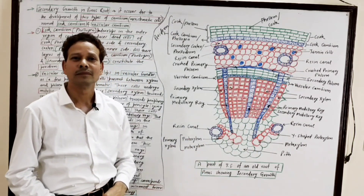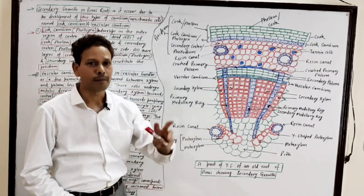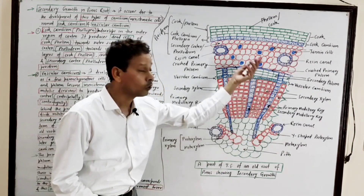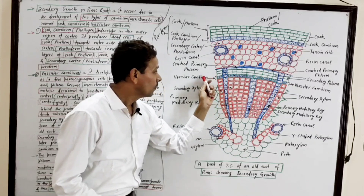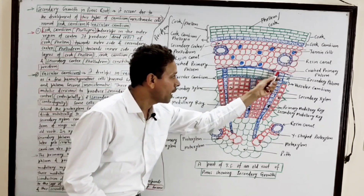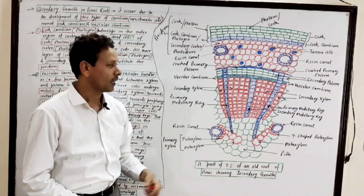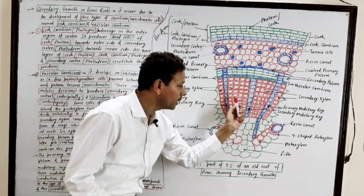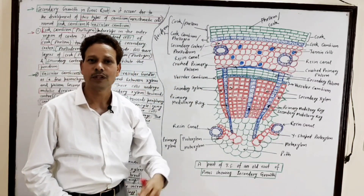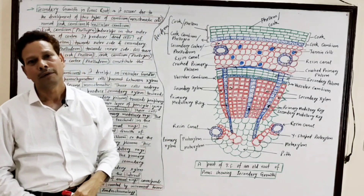In the vascular tissue, there are medullary rays of two types. Primary medullary rays develop just opposite to the proto-xylem from the vascular cambium, and they connect the primary phloem to the primary xylem. Secondary medullary rays persist only within the xylem tissue. Both primary and secondary medullary rays are involved in lateral conduction of substances.